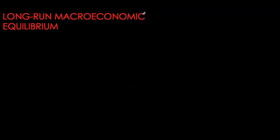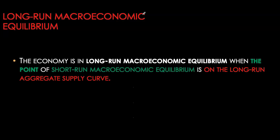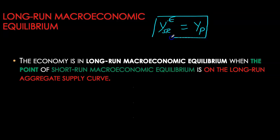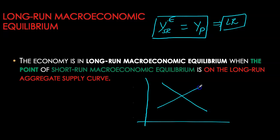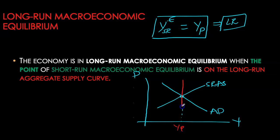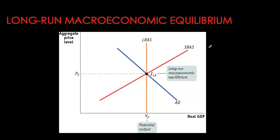Let's look at our long-run macroeconomic equilibrium. Long-run macroeconomic equilibrium is simply when our short-run equilibrium happens to be the same as our potential. My short-run equilibrium is simply where the AD and the short-run AS intersect. And if this intersection point also corresponds to my potential GDP, then my long-run AS will be vertical at this level. In terms of visualizing this on the diagram, it's simply when all three curves intersect at the exact same point.